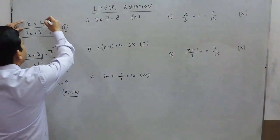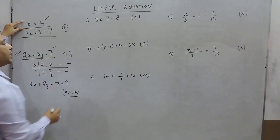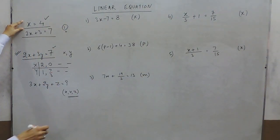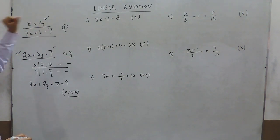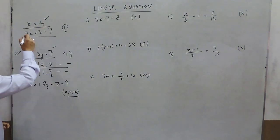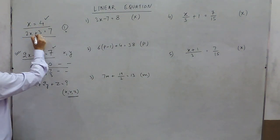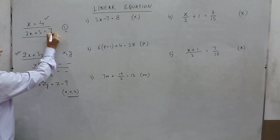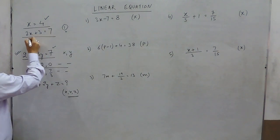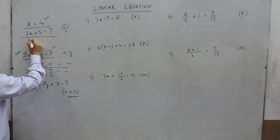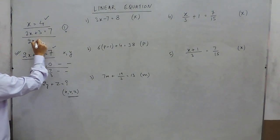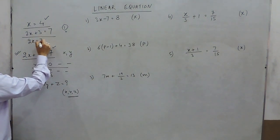When I say x equals 4, this is already solved — the value of x is 4. But when I say 2x plus 3 equals 7, it can be rewritten as 2x equals 7 minus 3.